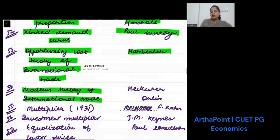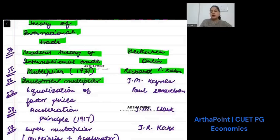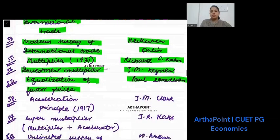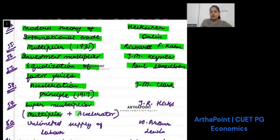Modern theory of international trade was given by Heckscher-Ohlin. Multiplier was given by Richard F. Kahn. Investment multiplier was given by Keynes. Equalization of factor prices was given by Paul Samuelson. Acceleration principle was given by J.M. Clark. Super multiplier concept, which is multiplier plus accelerator, was given by J.R. Hicks.